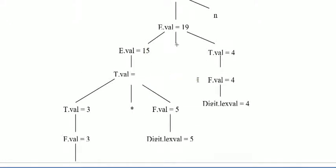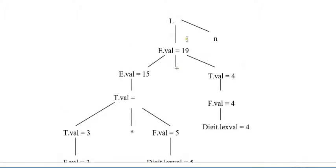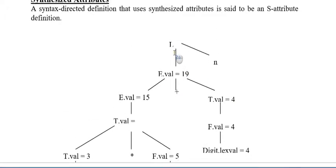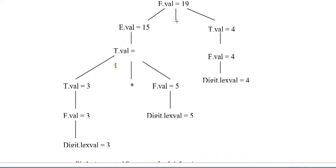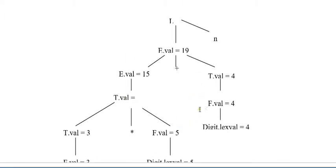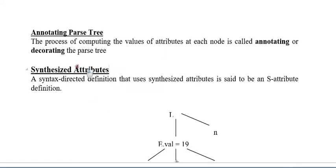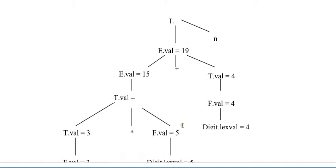We have generated the value of e is 15 and here the value of tval is 4. So after adding them we have generated the eval is 19. From this child, this value is generating to the top. That's why I said the synthesized attributes generate value from children to the parents. It is from bottom to the top.